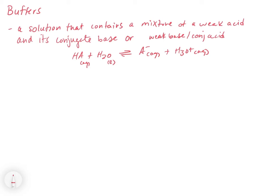For example, if we have a weak acid, like in this equation here, if we were to have 0.1 molar HA and 0.1 molar A-, that would be a good example of a buffer solution.